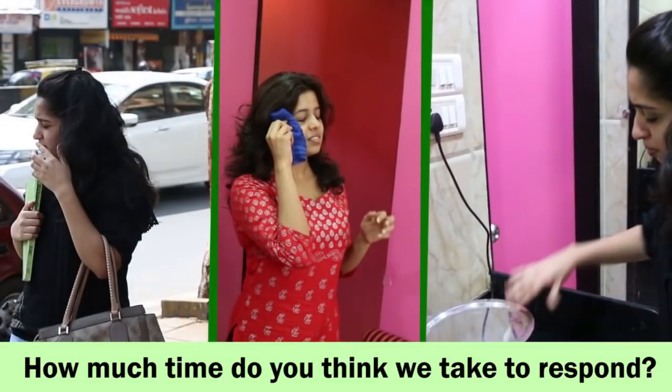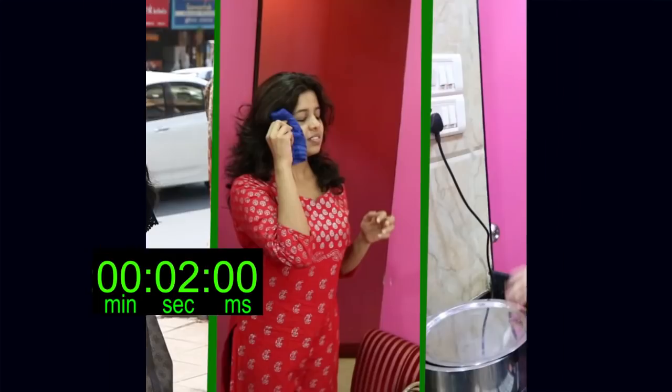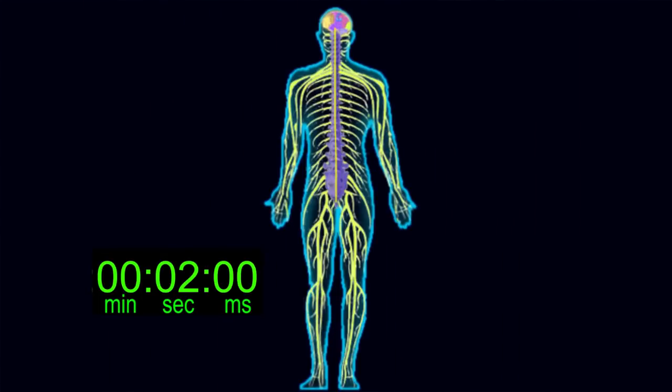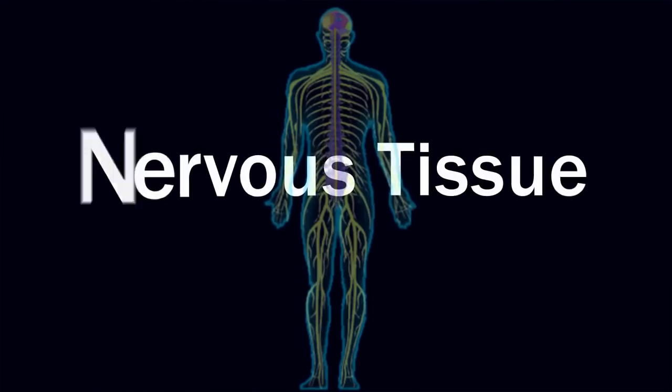But how much time do you think we take to respond? Maybe two seconds or less. But you'll be amazed to know that a lot of things happen in our body in this short span of time. And all of it happens due to something called the nervous tissue. And we'll be talking about the same today.